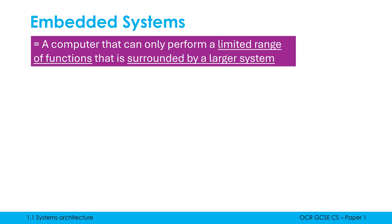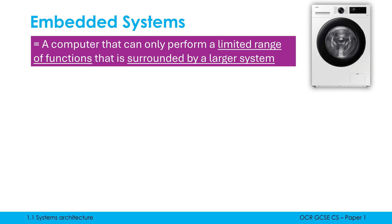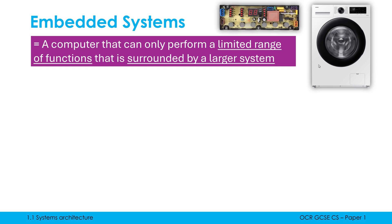There are loads of embedded systems in everyday life, often going under the radar. A classic example is a washing machine. A washing machine is a large system — most of it is not a computer; a lot of it is just a mechanical electronic system. But inside this washing machine there'll be a tiny computer, which is really what the embedded system is. This computer only performs a limited range of functions relating to washing machines — you cannot use it to play games, send emails, or watch YouTube videos.